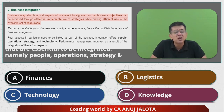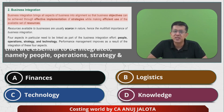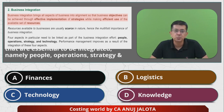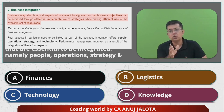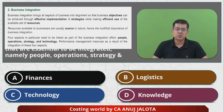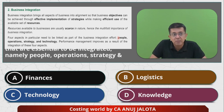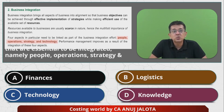Resources available are usually scarce — nobody has an infinite set of resources. There are limiting factors, hence the multifold importance of business integration. So whatever resources you have, all of them have to be aligned so that you all work in the same direction. Four aspects in particular need to be linked as part of business integration: namely people, operations, strategy, and technology. Business performance management improves as a result of the integration of these four aspects.